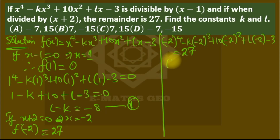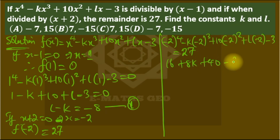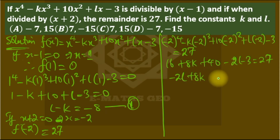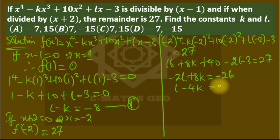Computing: (-2)⁴ = 16, so we get 16 plus 8k plus 40 minus 2l minus 3 = 27. Rearranging: 2l plus 8k, then 16 plus 40 minus 3 = 53, moving 27 over gives us 26. Dividing through by -2, we get l minus 4k = 13. We call this Equation 2.